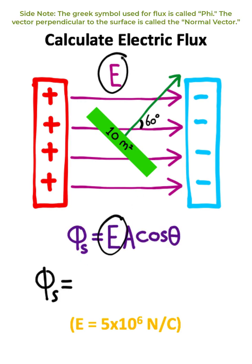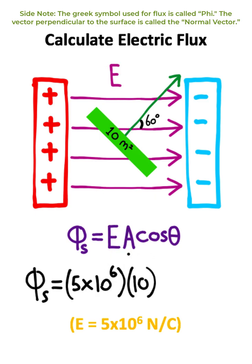The electric field given to us in this problem is 5 times 10 to the 6 newtons per coulomb. The area of the surface here is 10 square meters. We then need to take these two quantities and multiply them by the cosine of our angle, and our angle is 60 degrees.